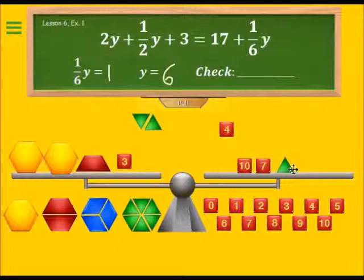Now if y is six, I have six and six is 12, and three is 15, and three is 18. So the left side of the equation is going to have the value of 18.